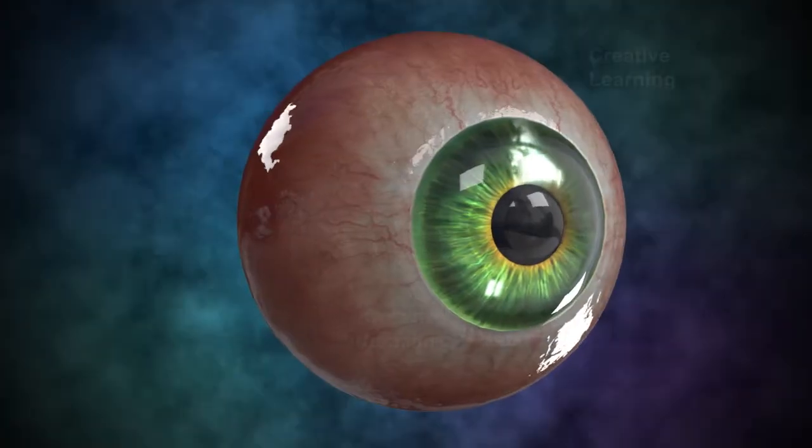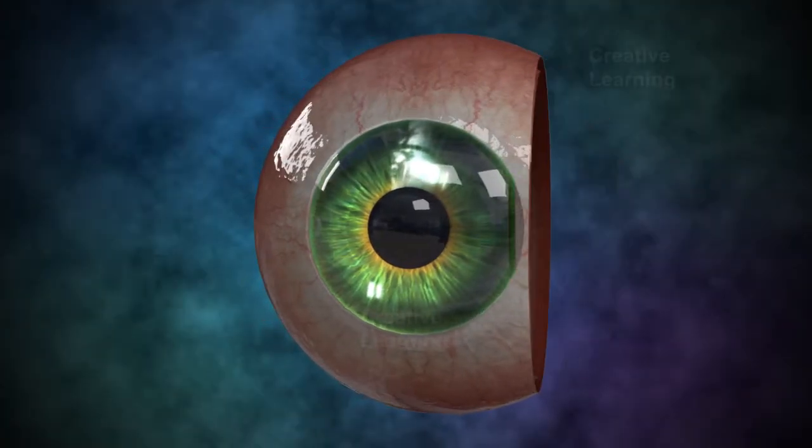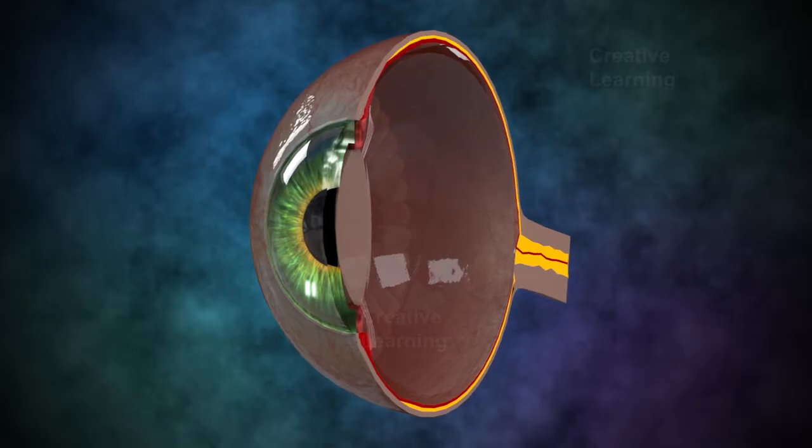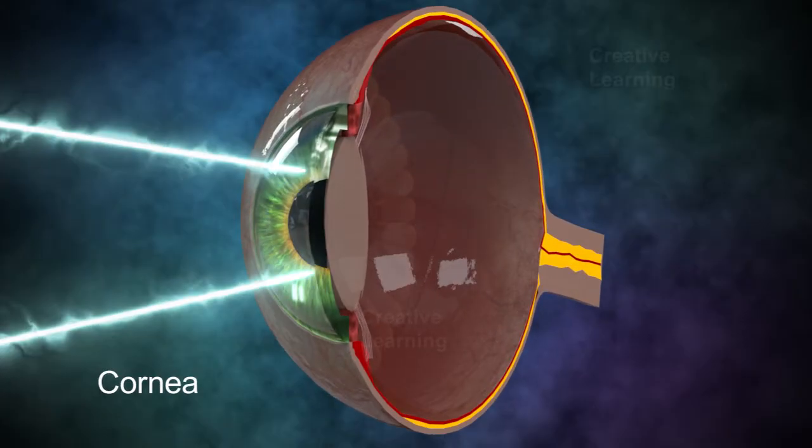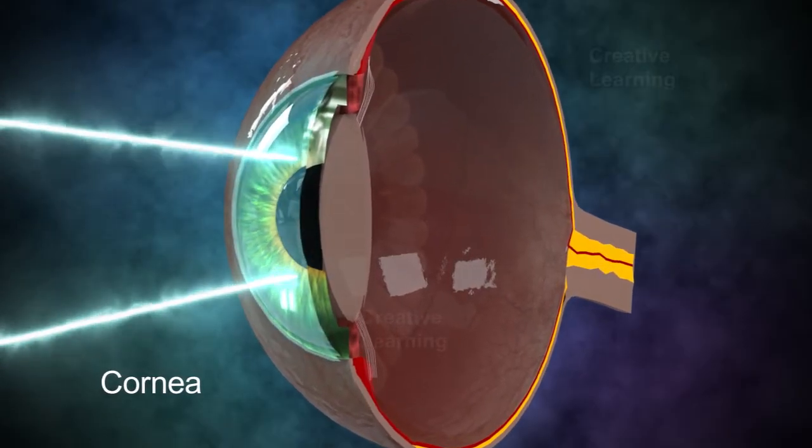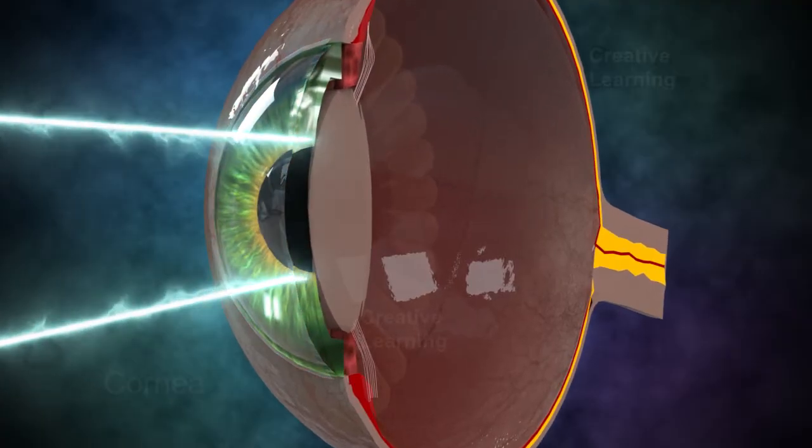The human eye is the organ of vision and has the ability to form images of the outside world. Light waves from an object enter the eye through the cornea, which is a transparent dome located in the front of the eye.